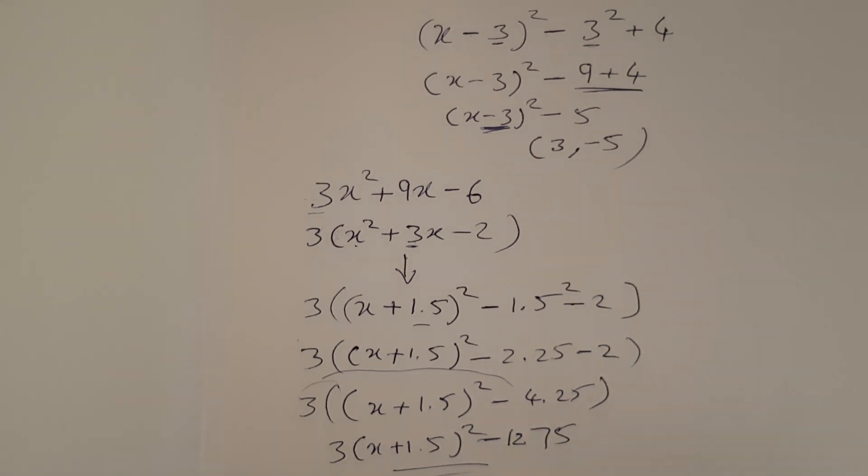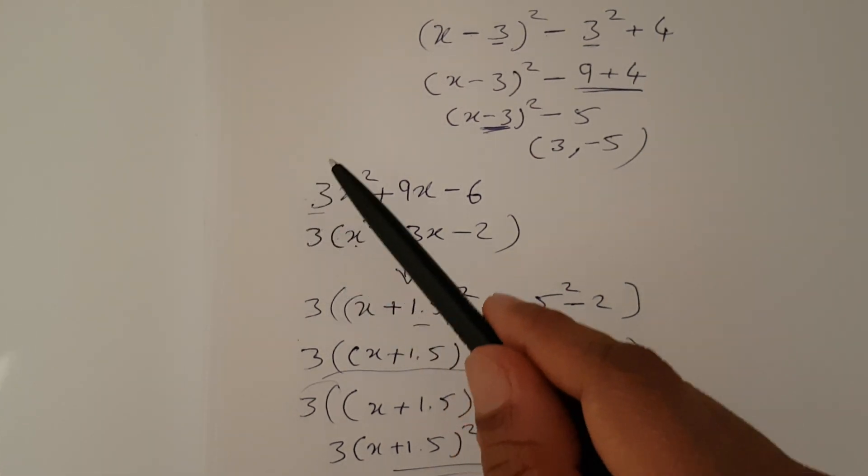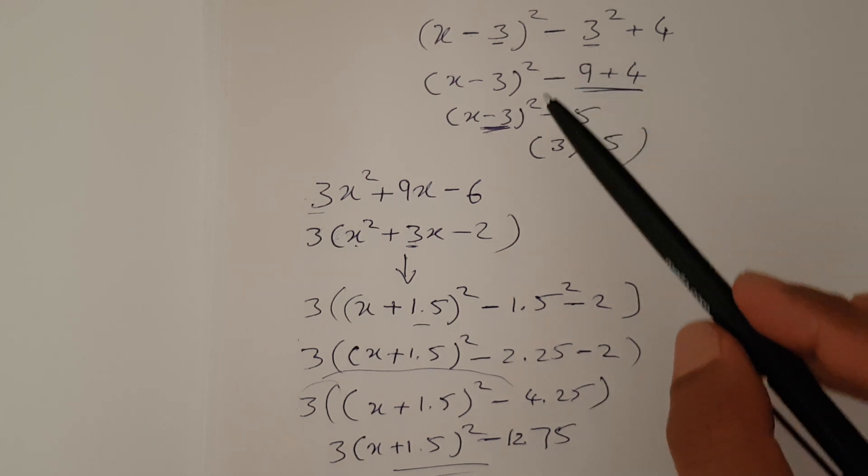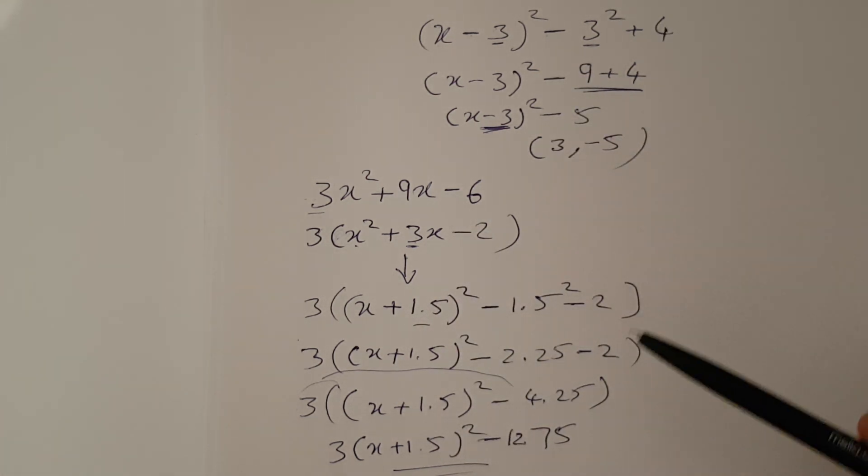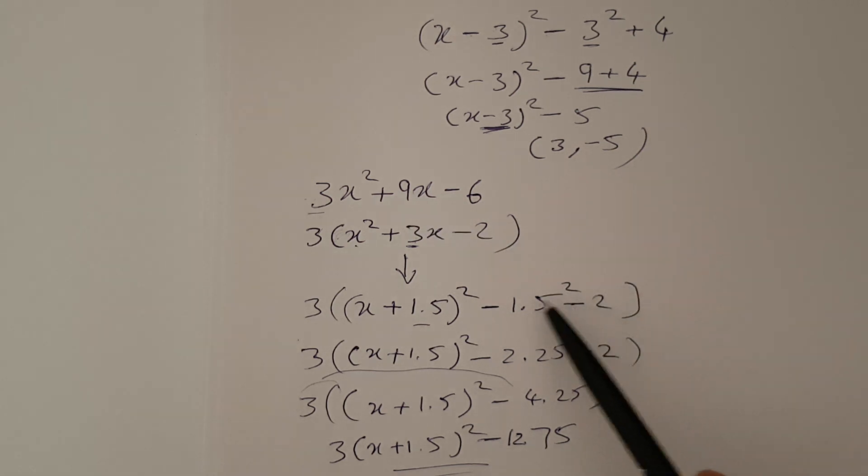That's completing the square if there is a number in front of x square. If there is no number, then just follow the normal process. If there is a number, just divide all of them with that number and follow the normal process and multiply at the end. Thanks for watching. If you like the video, please like it and subscribe. We'll get back to you with new videos. Thank you for watching. Bye.